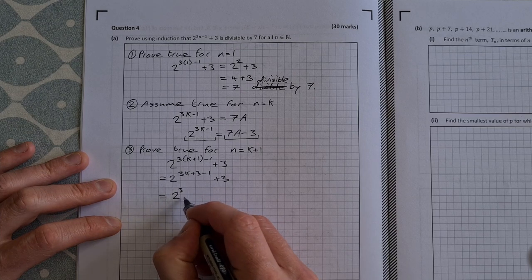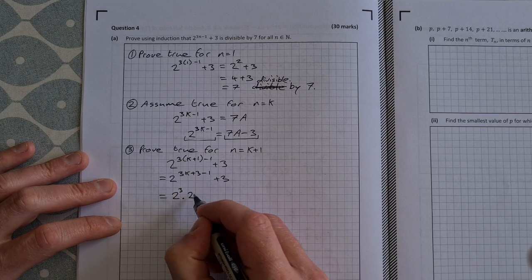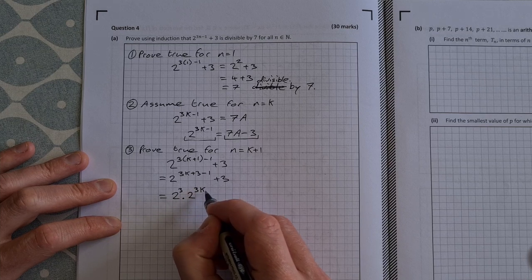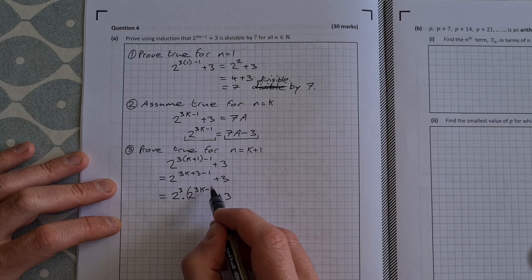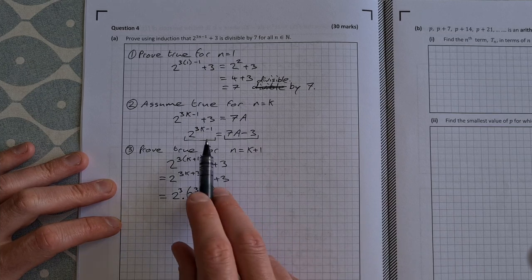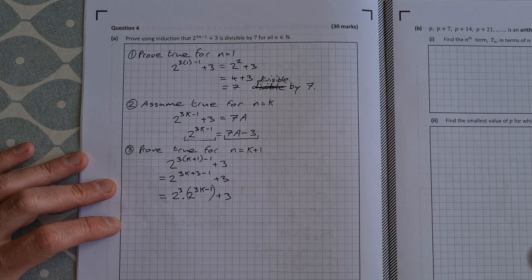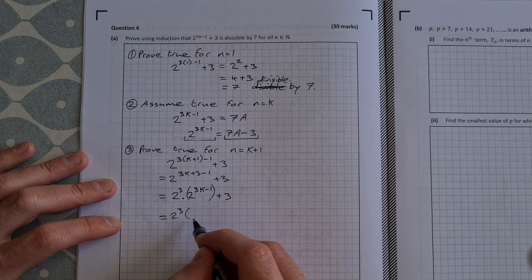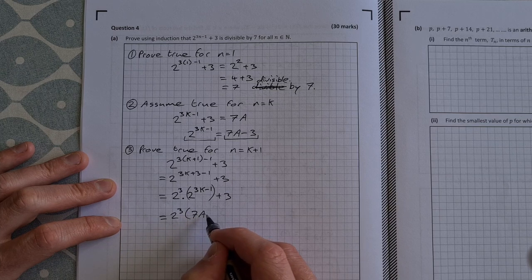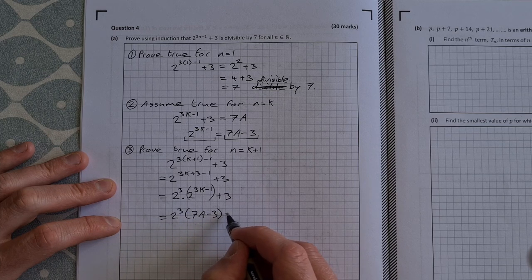2 to the power of 3 times 2 to the power of 3k minus 1 plus 3. So this here, the bit in brackets, I can now replace with 7a minus 3. So that's equal to 2 to the power of 3 by 7a minus 3 plus 3.